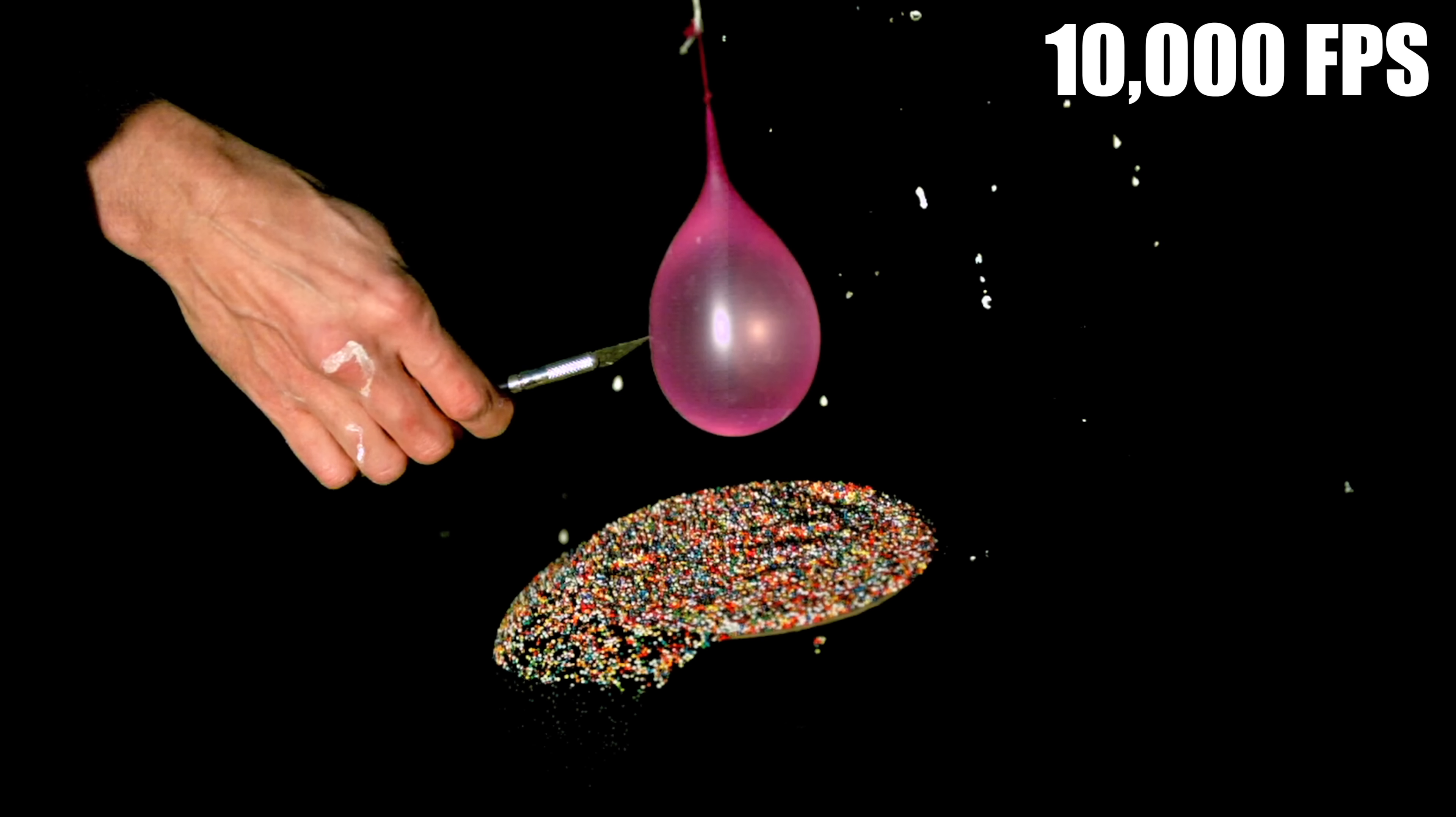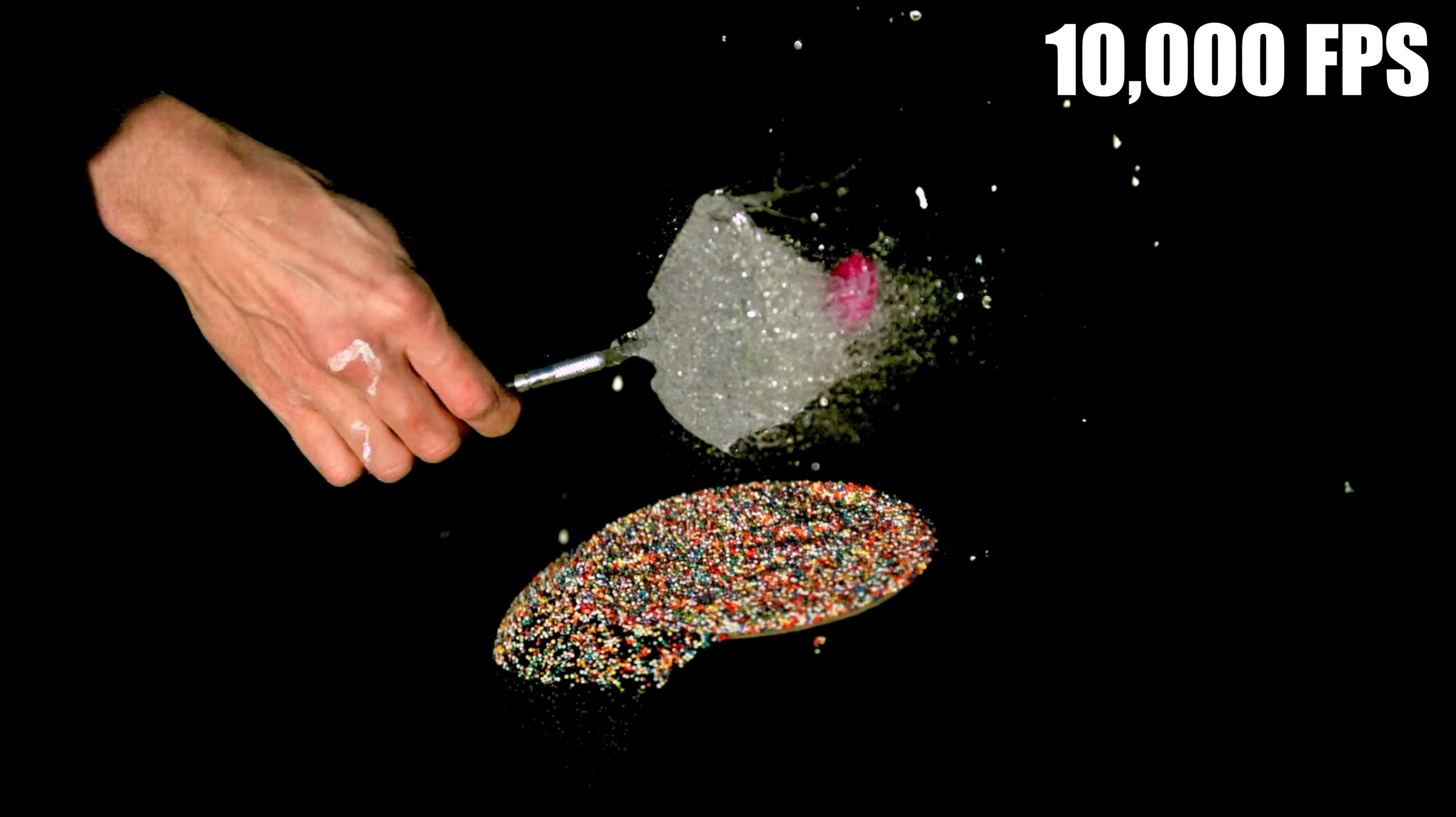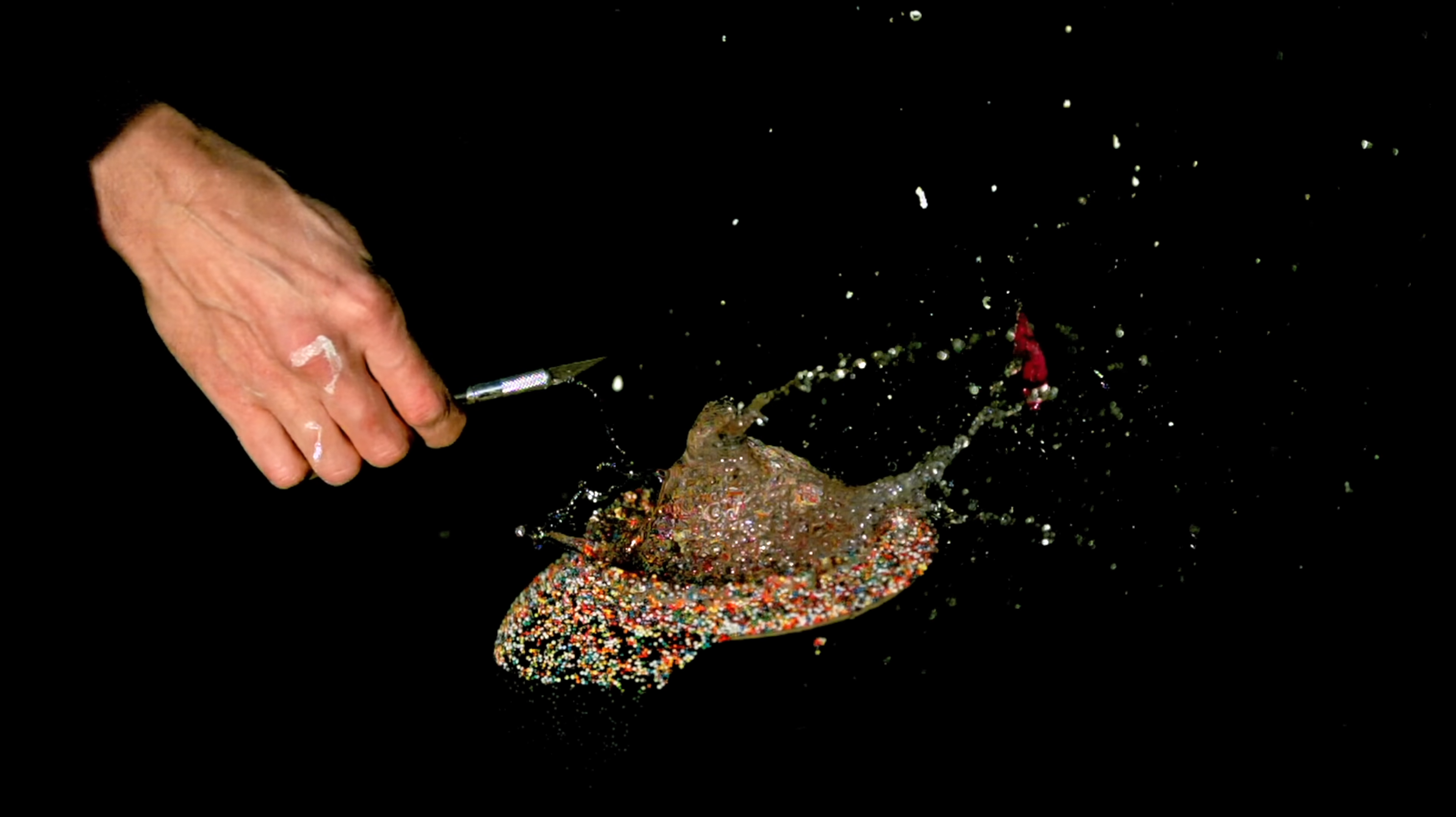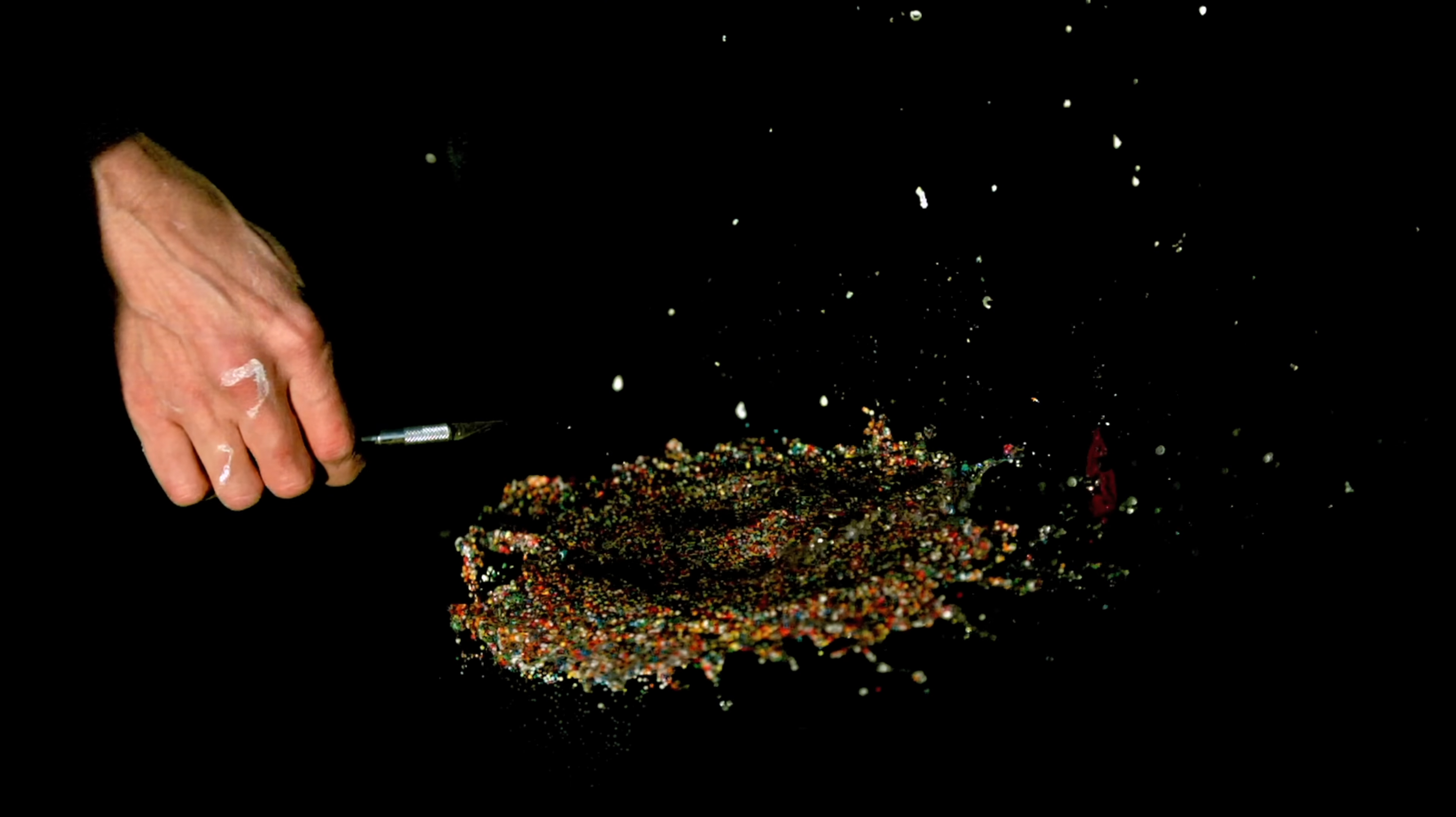That actually did seem to be less cohesive than water. Rubbing alcohol I wanted to try because it has a very low viscosity and different surface tension properties to water. Watching it in slow-mo, it did seem like the balloon deformed it more than it does for water. By the time it reaches the sprinkles below, it barely has any balloon shape left.